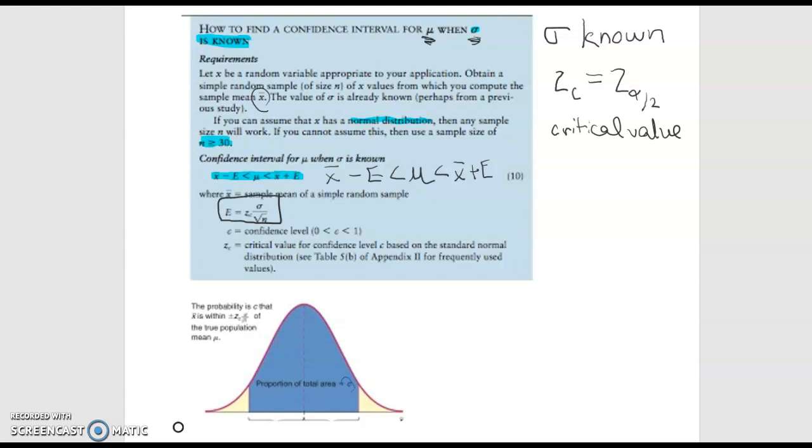So we have a formula for our error and in that formula we take our critical value and multiply it by the population standard deviation over the square root of n.